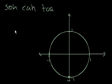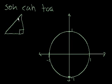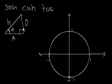SOHCAHTOA. What that tells us is, let's say we had a right triangle. This is the right angle here, and this is the hypotenuse — let me label the hypotenuse H. We want to use this angle right here, theta. This is the adjacent side, and this is the opposite side. SOHCAHTOA tells us that sine is equal to opposite over hypotenuse, cosine is equal to adjacent over hypotenuse, and tangent is equal to opposite over adjacent.